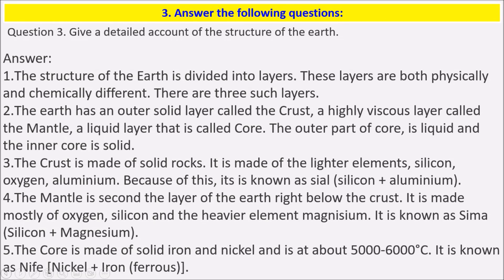Question 3: Give a detailed account of the structure of the Earth. The structure of the Earth is divided into layers that are both physically and chemically different. There are three such layers. The Earth has an outer solid layer called the crust, a highly viscous layer called the mantle, and a liquid layer called the core. The outer part of the core is liquid and the inner core is solid. The crust is made up of lighter elements — silicon, oxygen and aluminum — and because of this it is known as SIAL (silicon + aluminum).